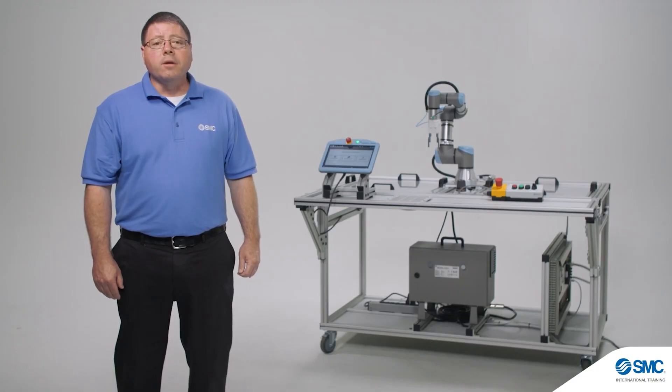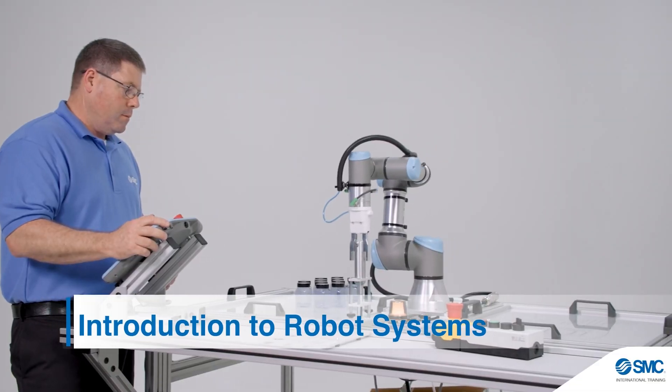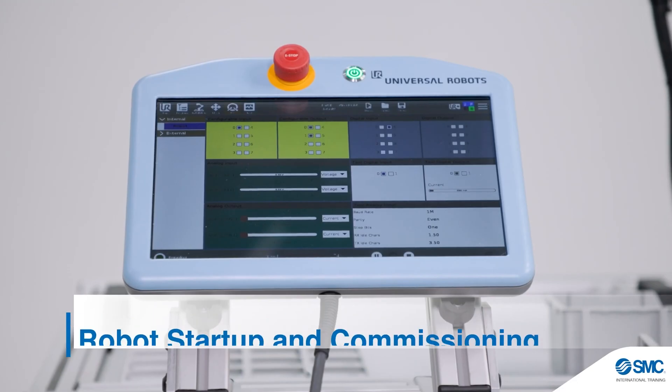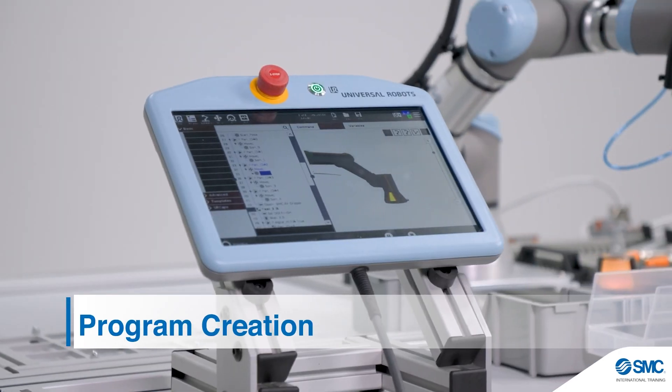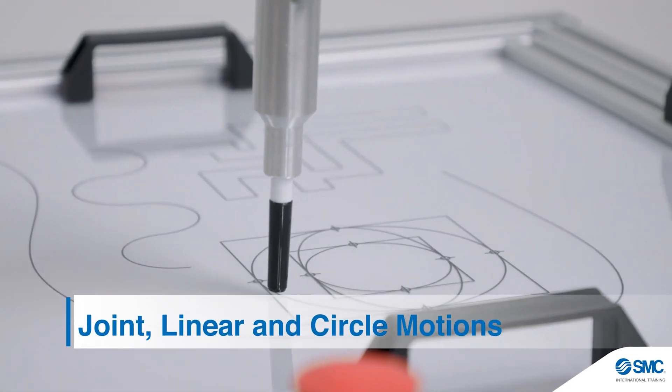The curriculum for our base robot training system includes these 11 topics: introduction to robot systems, robot startup and commissioning, end-of-arm tooling, program creation, joint, linear, and circle motions,